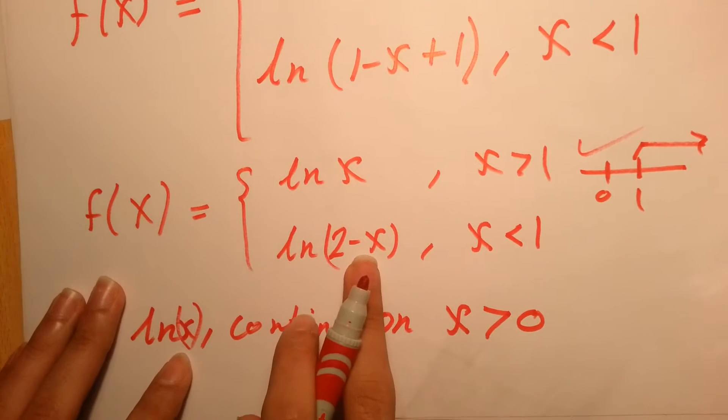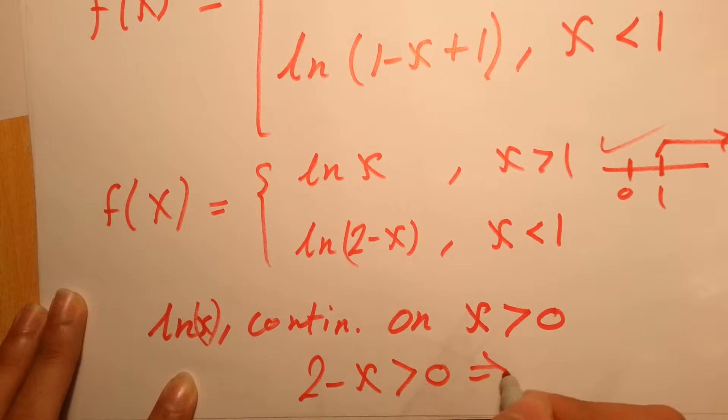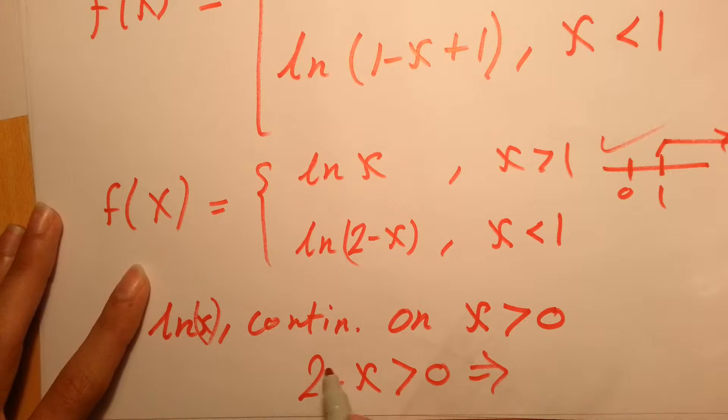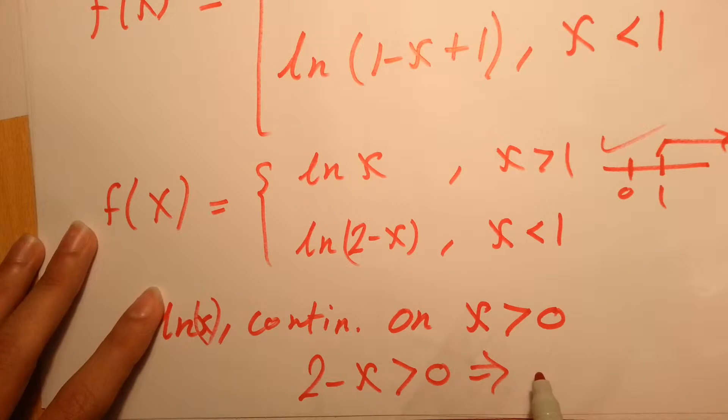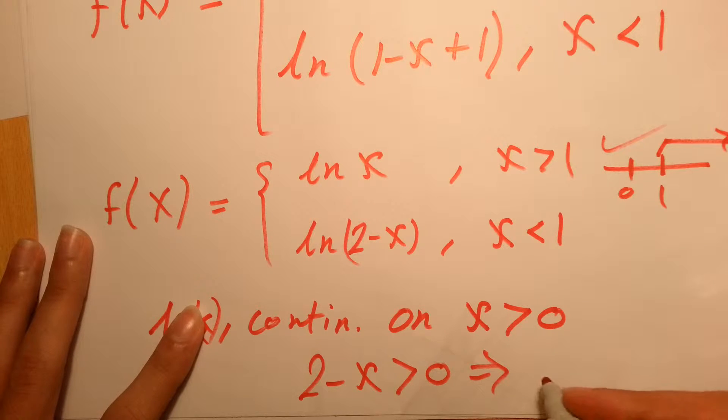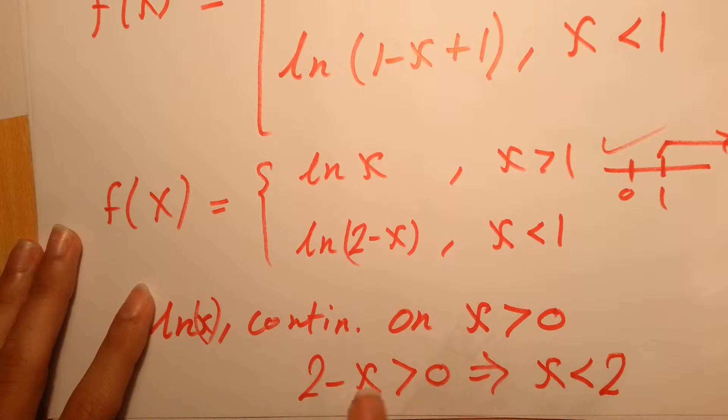What about the second part, 2 minus x? Then 2 minus x must be greater than 0. So if we take the 2 to the other side, we directly know that x must be less than 2. So x must be less than 2.